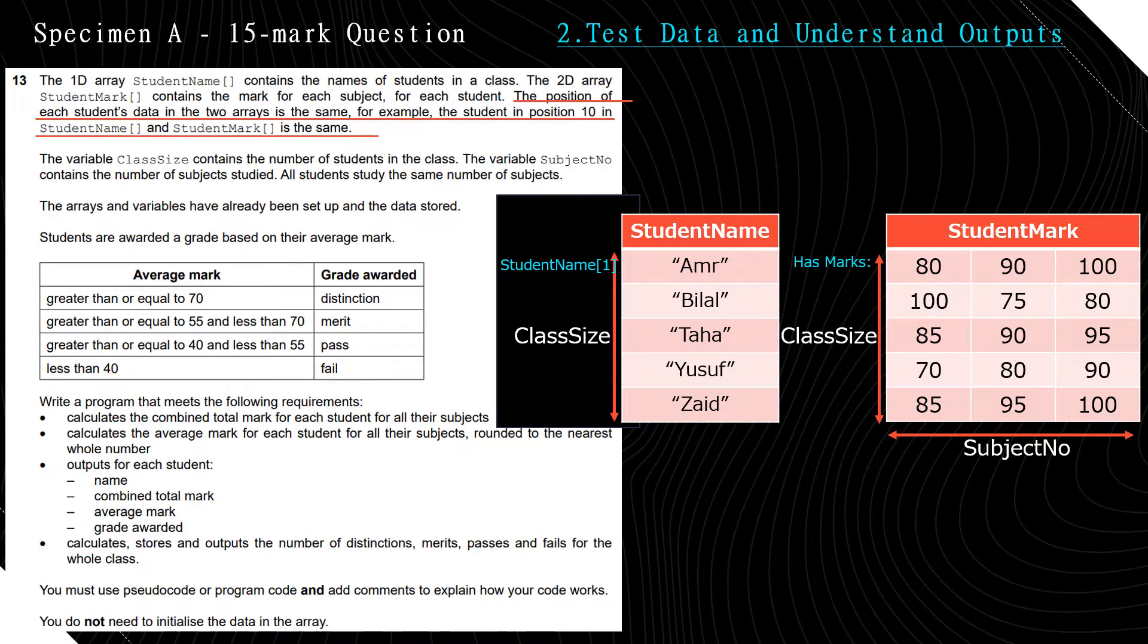And it says every student is studying the same number of subjects. So that means they all have marks. They all have 3 marks. So Amr's marks are 80, 90, 100. Bilal's marks are 100, 75, 80. Taha's marks are 85, 90, 95. Yusuf's marks are 70, 80, 90. And Zaid's marks are 85, 90, 500.